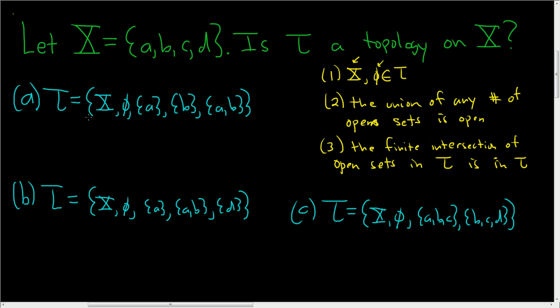Okay, so for A, we just have to check all of these conditions. So let's go through it very carefully. The first one is satisfied, so no problems there. Now we can just eyeball this and ask ourselves, if we take the union of any number of these sets, do we also get a set that's inside tau? And we do.